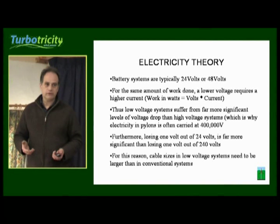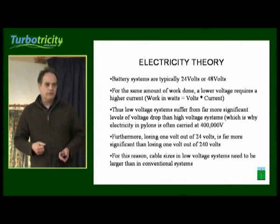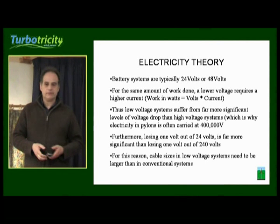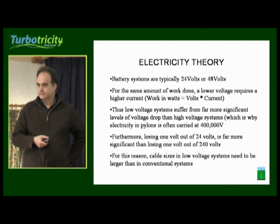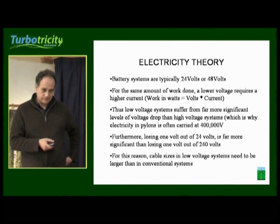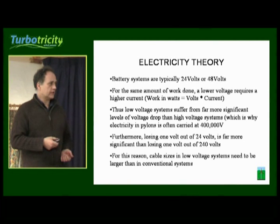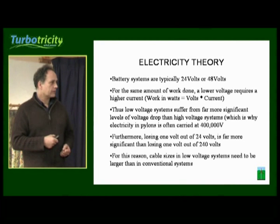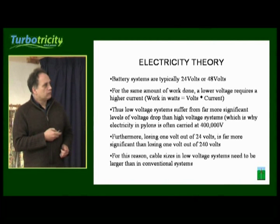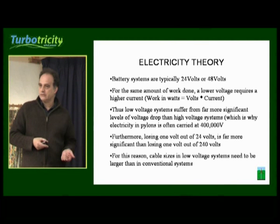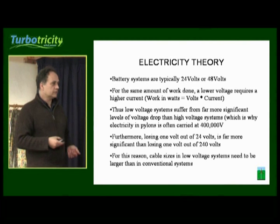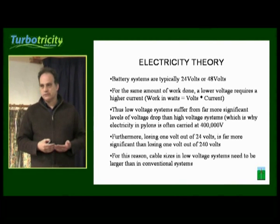Now, if we put in a wind turbine and we have a battery system and we have a choice between, say, 24 volts and 48 volts — for the amount of work done, you're looking at the voltage multiplied by the current. So a low voltage system would require twice the current of the higher voltage system. That's one of the reasons why we carry electricity along pylons, sometimes at 400,000 volts — in the States at even higher levels than that. If you lost, say, one volt out of 48 volts, you'd be losing roughly 2% of your power. So the greater the voltage drop and the lower the voltage, the greater the loss is.